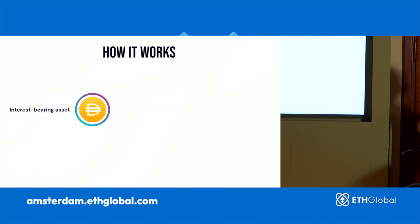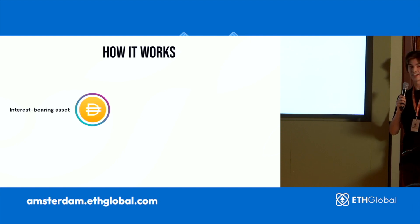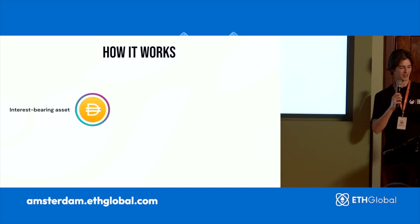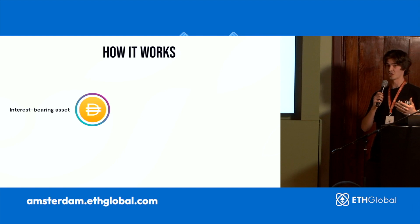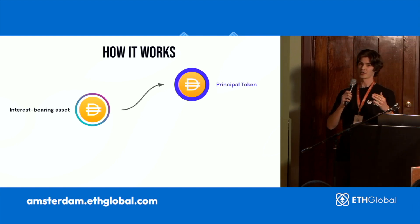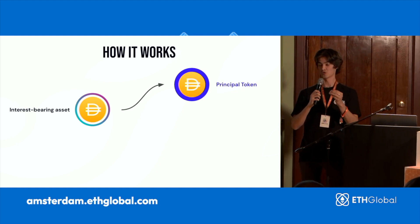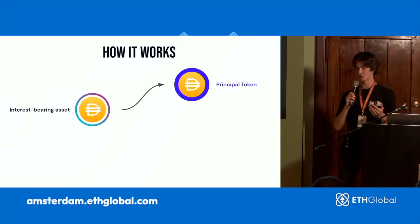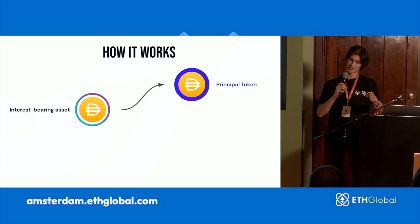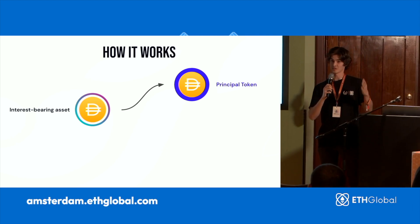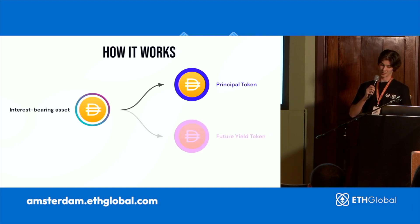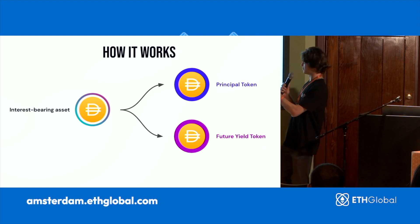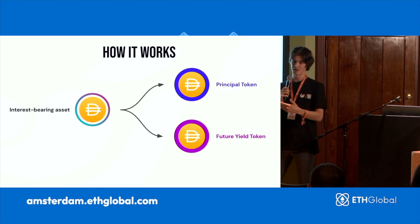Now we get into the more technical part for you hackers. How does it work? First, you get your interest-bearing assets — something like aDAI if you're working with Aave, simply generating yield each second. This is an interest-bearing asset because it generates yield. You simply deposit this into APWine, and APWine is going to split that token into two different ones. The first one is the principal token, which represents your initial deposit — the value of the initial deposit at the time you deposited on the platform. The second one, and this is where it gets very interesting, is the future yield token. This is the primitive that we came up with.